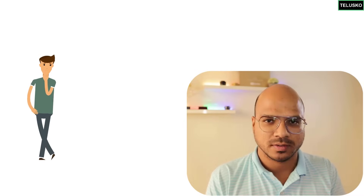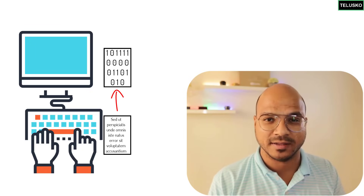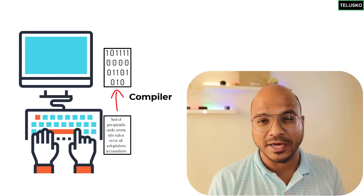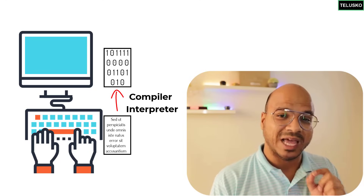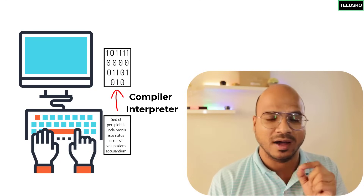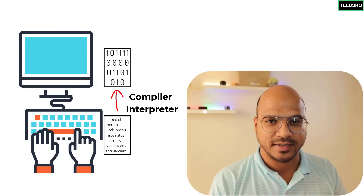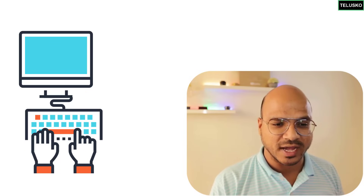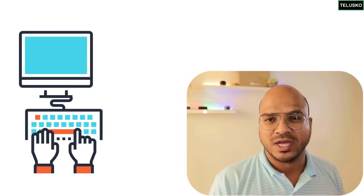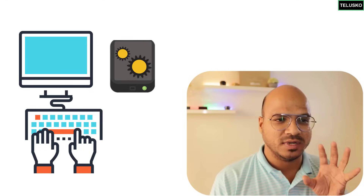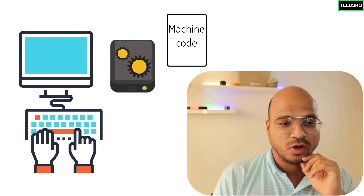Now, where will you write and run this code? Your computer understands only one language: binary. Whatever you write has to be converted into binary, either by a compiler or an interpreter. We'll talk about those two in detail later. For now, remember that whatever you write needs to be converted into machine code, and in the world of JavaScript we use a JavaScript engine to do that.